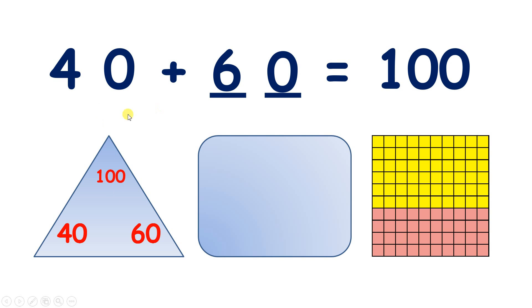So as well as 40 plus 60, there are three more facts that we know from this triangle. What's the other three facts that we know?